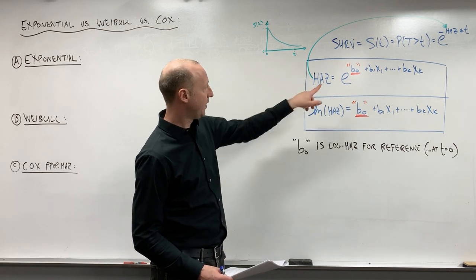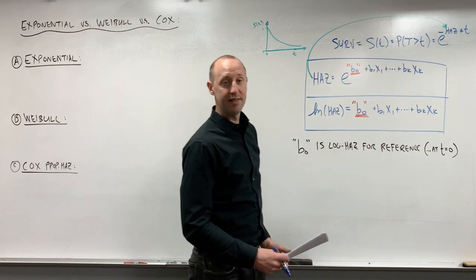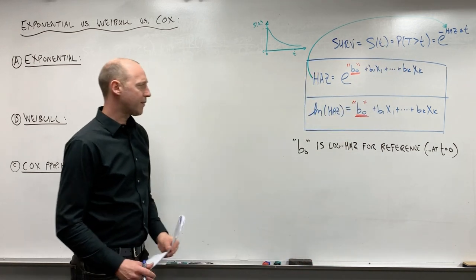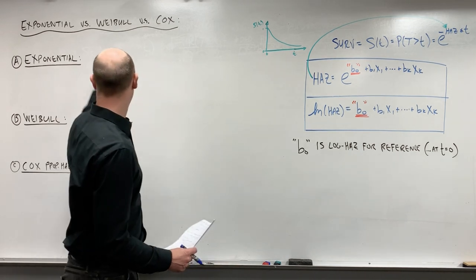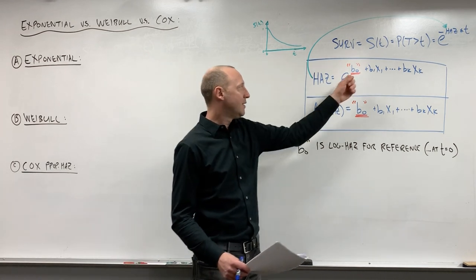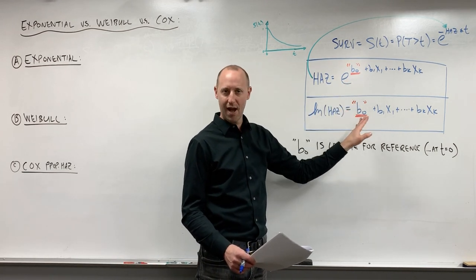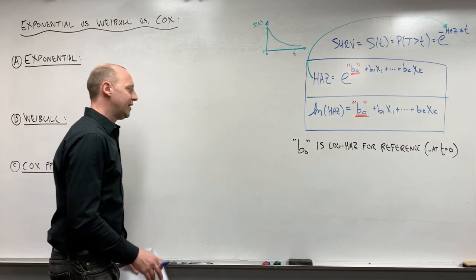So we can use this regression model, estimate the hazard, and then sub that in here to get the survival function. We talked about the idea that what really differentiates exponential, Weibull, and Cox proportional hazard model is this intercept term and how that works. So let's get into that.